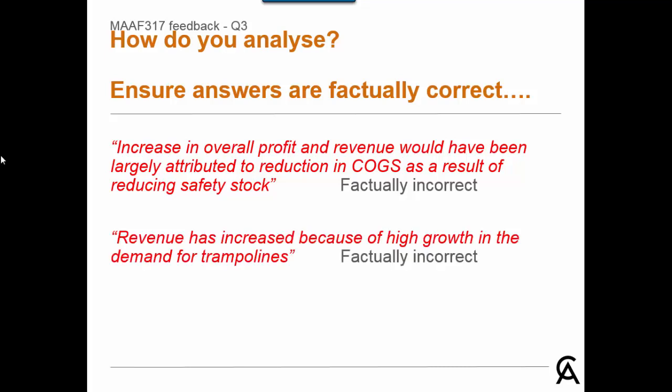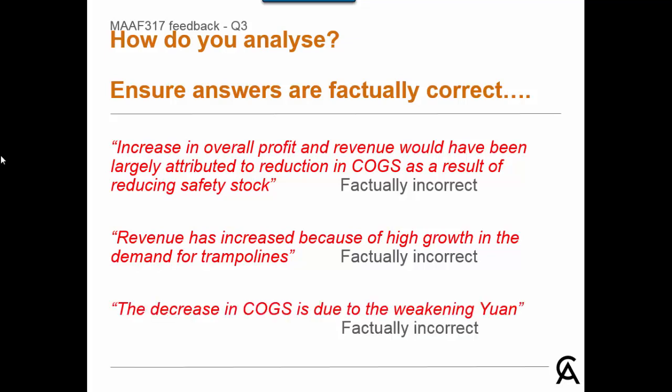Another answer states that revenue has increased because of high growth in demand for trampolines — that is also incorrect. And the last point states that the decrease in cost of goods sold is due to the weakening Yuan. Whilst the weakening Yuan would have had an impact on cost of goods sold, the main reason cost of goods sold has decreased in dollar terms is the decline in volume, or as a percentage of sales, it is due to the increase in the selling price.